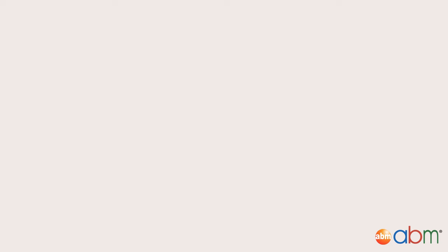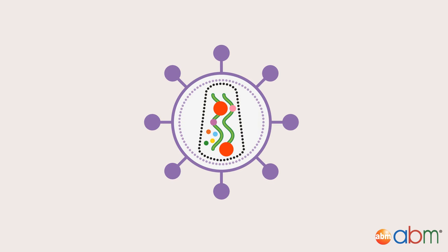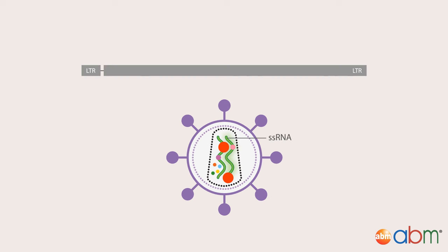The lentivirus is part of the retrovirus family of viruses, with HIV-1 being the most widely studied. Members of this family contain a positive single-stranded RNA that is reverse transcribed into DNA and integrated into the host cell's genome. The HIV lentiviral RNA genome contains three major genes: